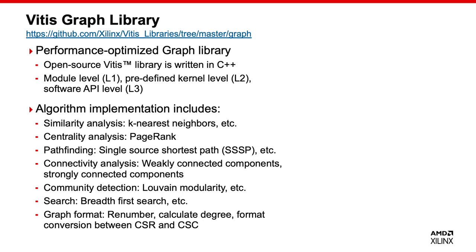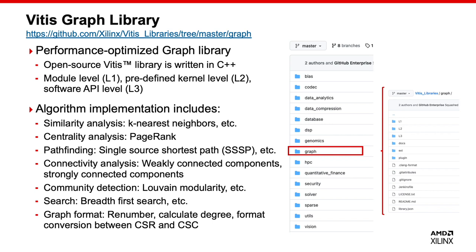Currently, the graph library includes the following algorithm implementations: k-nearest neighborhoods in similarity analysis; PageRank, commonly used in web search and centrality analysis; Louvain modularity in community detection; and as we use in this session, single-source shortest path (SSP) in pathfinding. You can access the graph library on GitHub, where there are subfolders for different levels, documentation and benchmark results, and test cases for you to run the library.